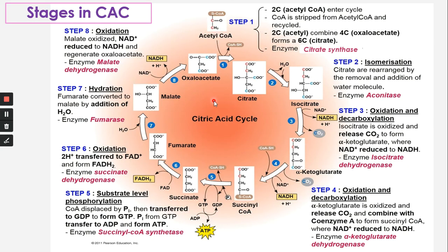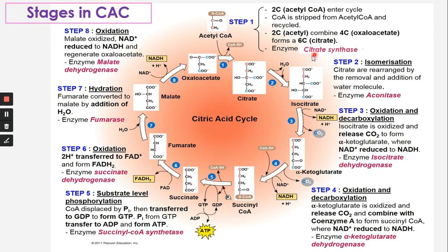Step 1 is condensation: acetyl-CoA, a two-carbon compound from pyruvate oxidation, combines with the four-carbon compound oxaloacetate to form citrate, a six-carbon compound. In this reaction, coenzyme A is removed. The enzyme that catalyzes this reaction is citrate synthase — named so because it synthesizes the citrate.